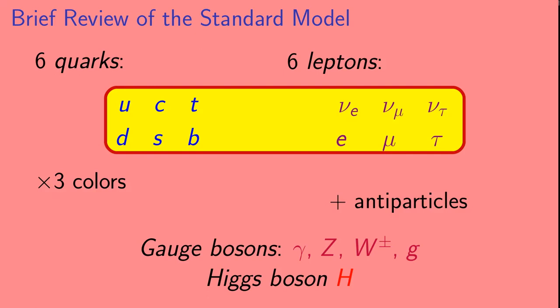It contains 6 quarks and 6 leptons. The quarks are the up, down, charm, strange, top, and bottom. The leptons are the electron, muon, tau, and their associated neutrinos.